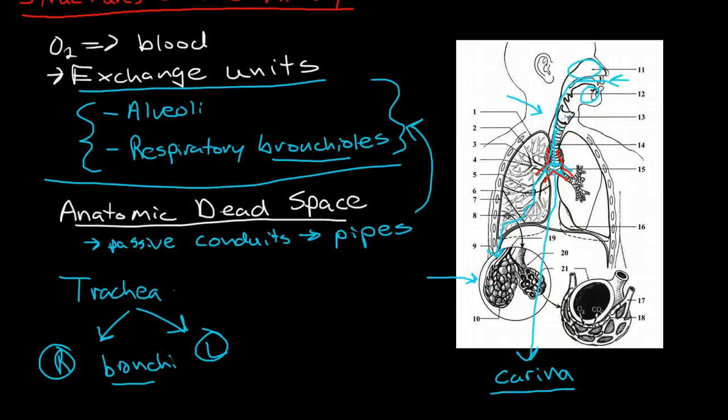Now the right and left bronchus then keep subdividing further and further. And we get smaller and smaller branches of bronchi. The branches narrow and narrow and eventually we get into smaller structures called bronchioles. Okay so that's my basic overview of the anatomy of the structures of the airway.